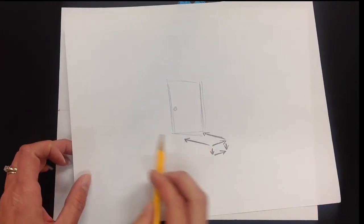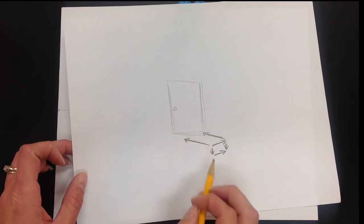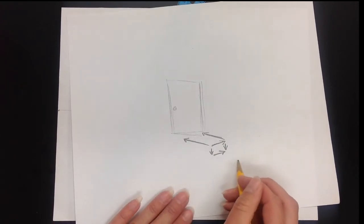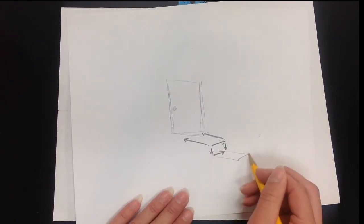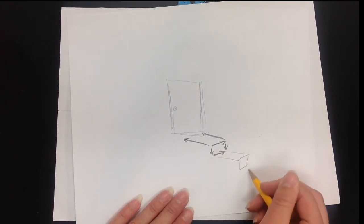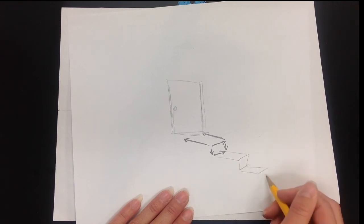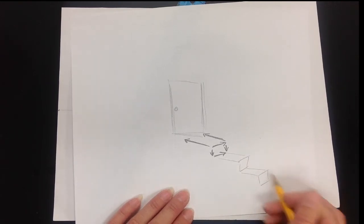So to review: you cross over, cross over, connect back, drop down, drop down, connect back. It's just that whole thing repeated over and over again however many times you need it.